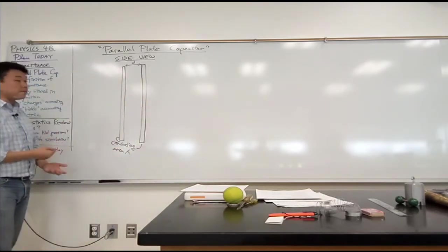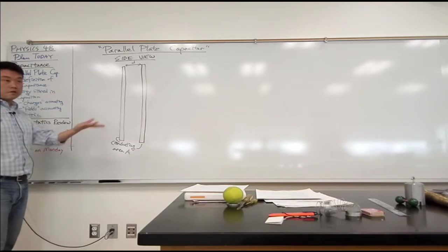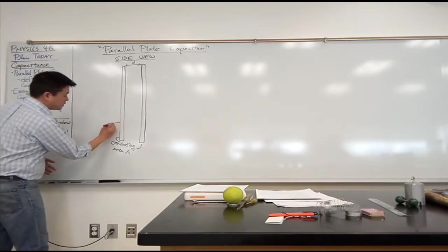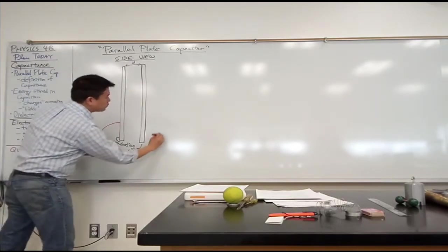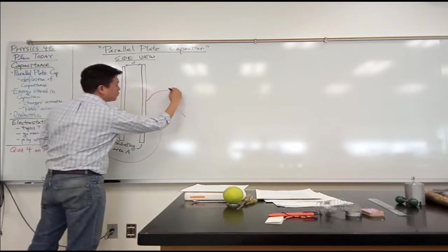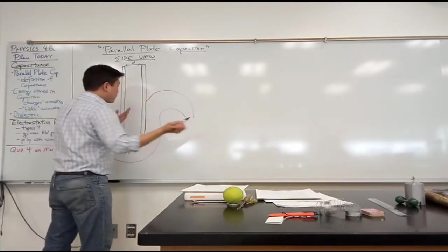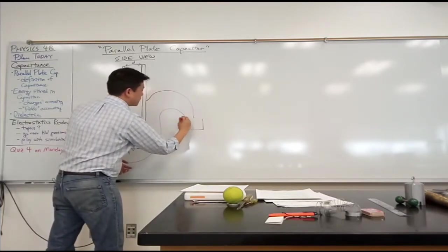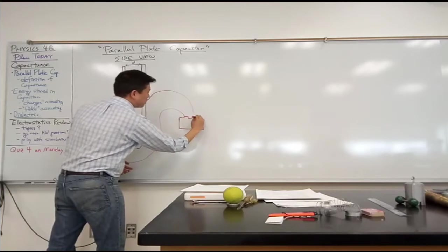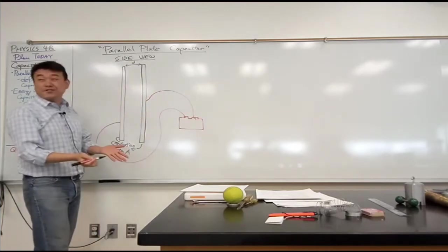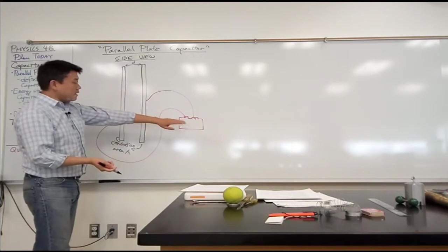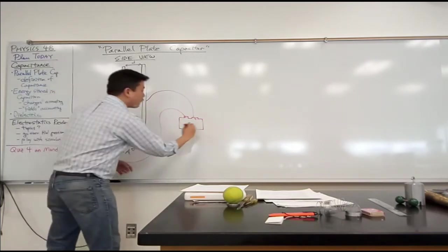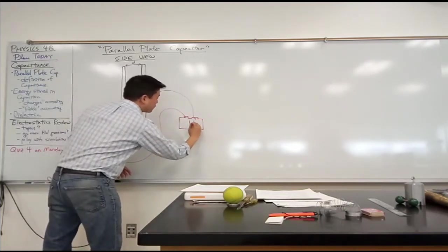And what I'm going to do is connect both of them to a battery, to a voltage source. That's going to provide some amount of voltage difference. So this end is connected through a conducting wire. This end is also connected through a conducting wire to a battery. Let me draw it like a car battery or something. But it's a voltage source providing some voltage of V naught.